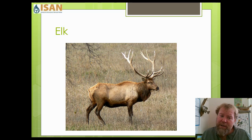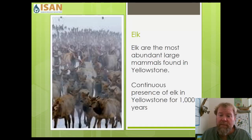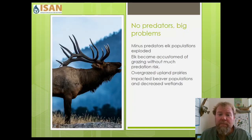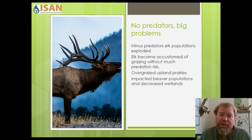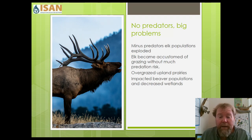Without the wolves — without that apex predator — elk populations exploded and those grasslands came under a lot of stress. Elk became accustomed to grazing in the open without fear of being preyed upon. There were bears and coyotes, but not at the populations needed to remove enough elk from the ecosystem. They overgrazed those upland prairies and impacted the beaver populations, which affected wetlands. Elk are the most abundant large animals in Yellowstone and have had a continuous presence there for over a thousand years.